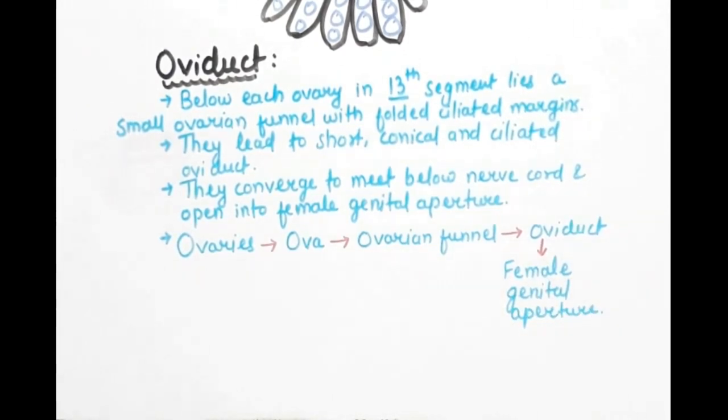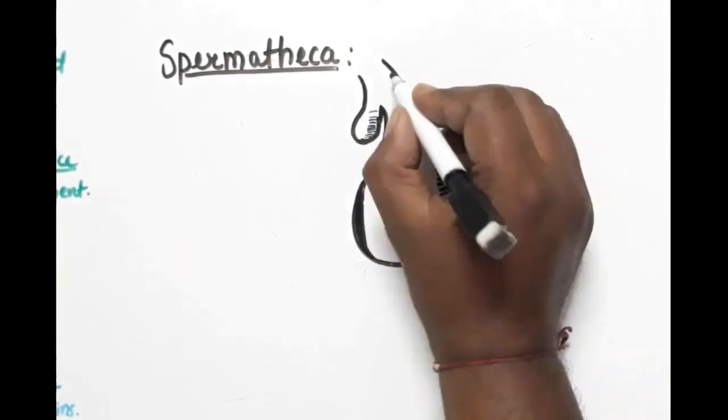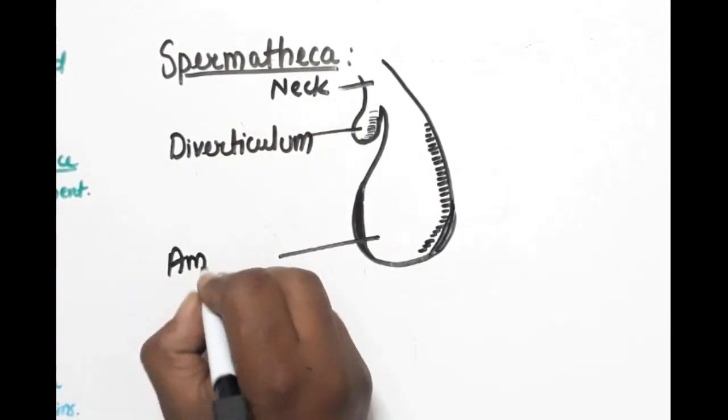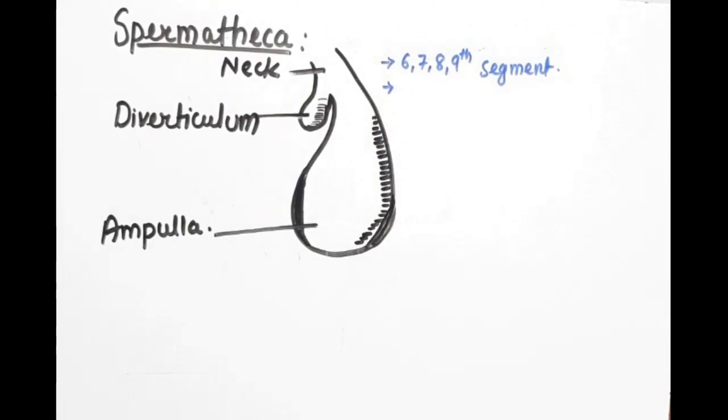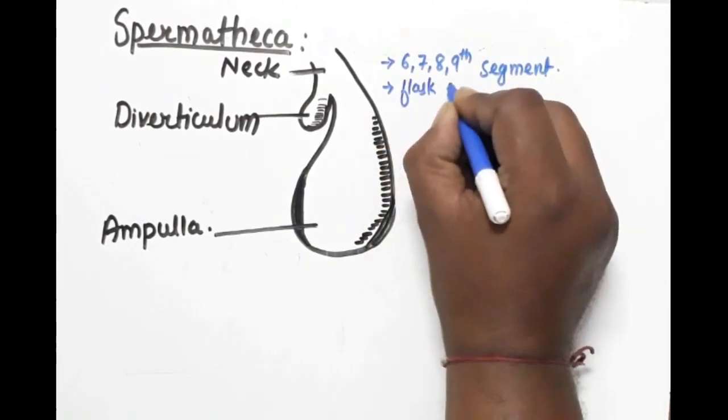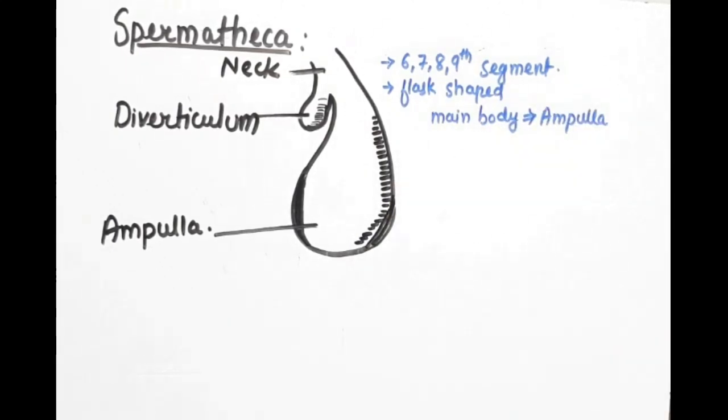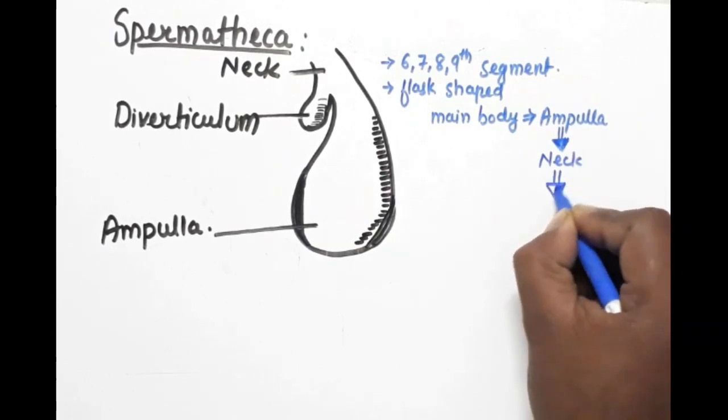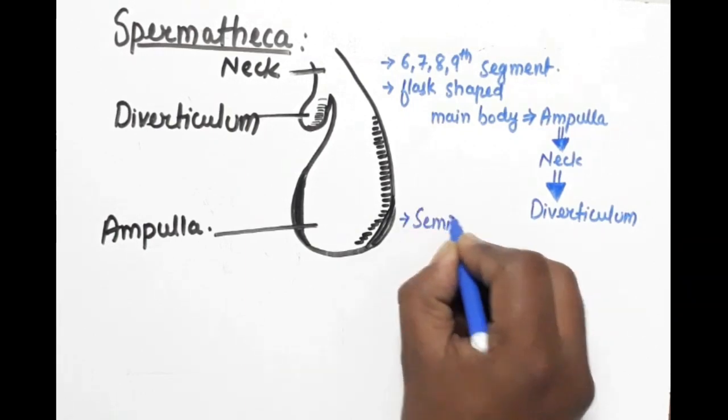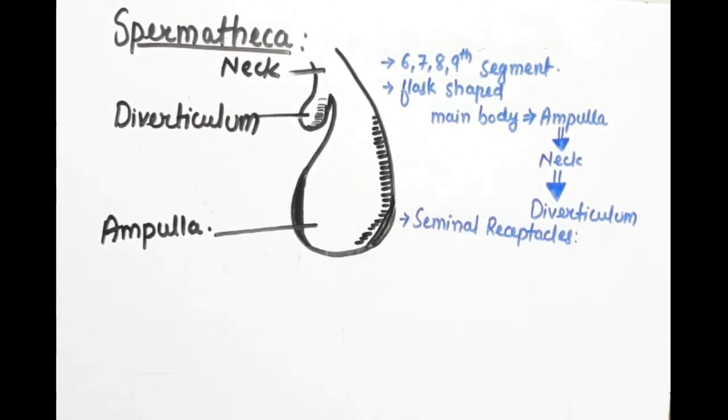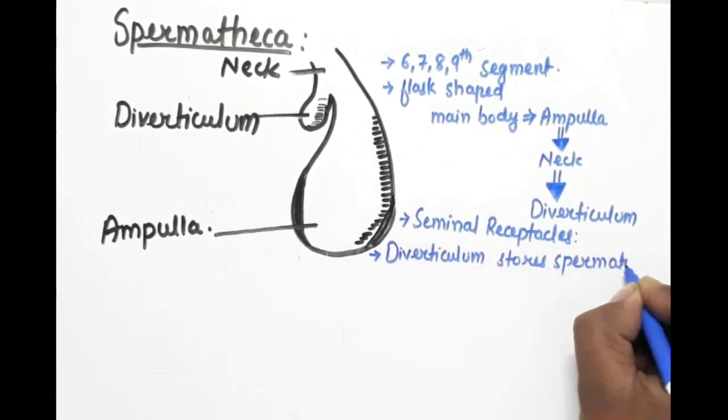Now let us talk about spermatheca. Spermatheca has the neck, diverticulum, and ampulla. There are four pairs located in 6, 7, 8, and 9 segments. Basically their shape is flask-shaped and the main body of the spermatheca is ampulla which is directly joined to the neck. Under the neck, a small pouch hangs which is called diverticulum.